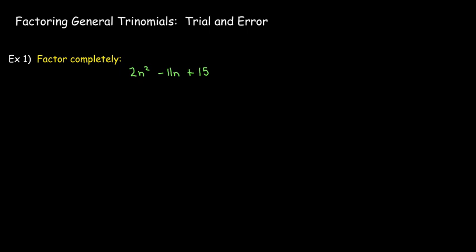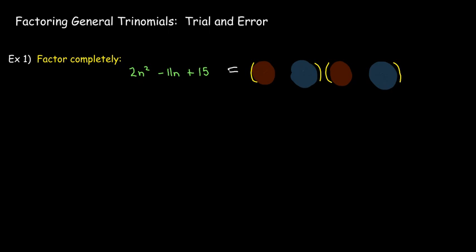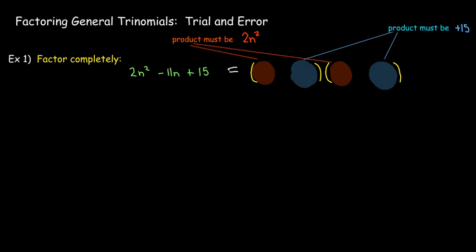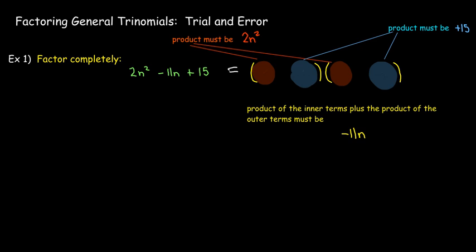Let's take a look at trial and error. We're going to try to factor 2n² minus 11n plus 15. The idea is that it's going to be the product of two binomials, so I'll have two terms in each set of parentheses. The first two terms have to multiply to make 2n², and the second two terms have to multiply to make positive 15 — that's the quadratic term and the constant term. Then the inner and outer terms multiply together should give negative 11n, so that FOIL works.